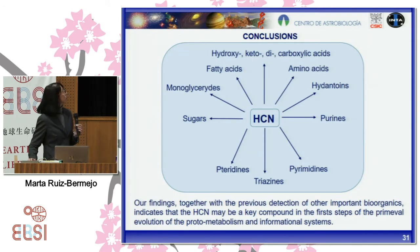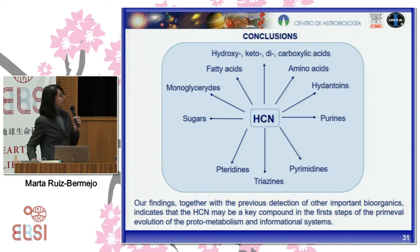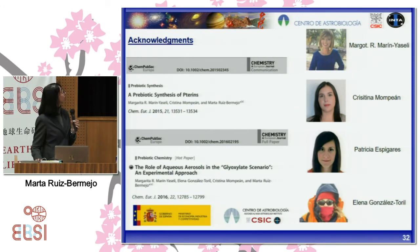As a general conclusion, our findings together with the previous detection of other important bioorganics indicate that hydrogen cyanide may be a key compound in the first steps of the primordial evolution of protometabolism and informational systems. I would like to thank Margot, Cristina, and Patricia for their patient work in the synthesis, handling, and analysis of the hydrogen cyanide polymers, and Elena González Toril for her collaboration in the statistical study.